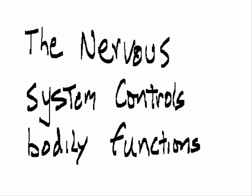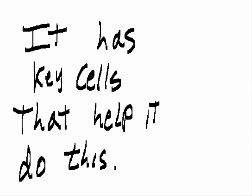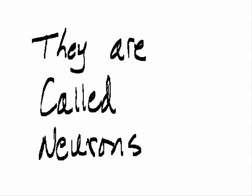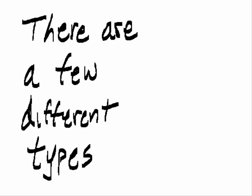The nervous system controls bodily functions. It has key cells that help it do this. They are called neurons.